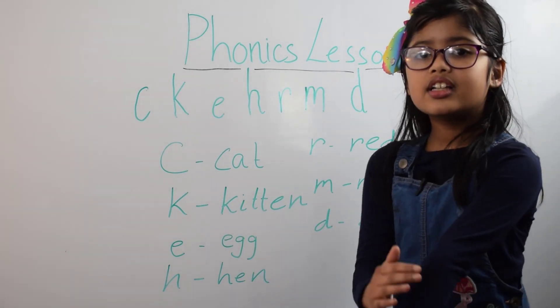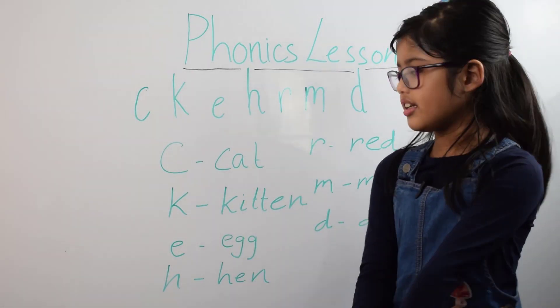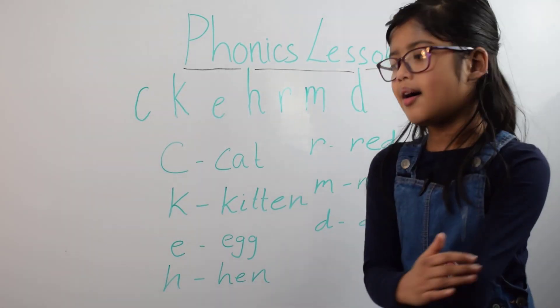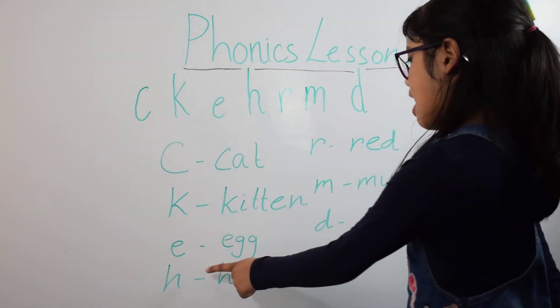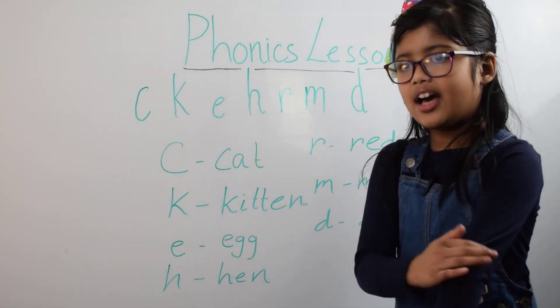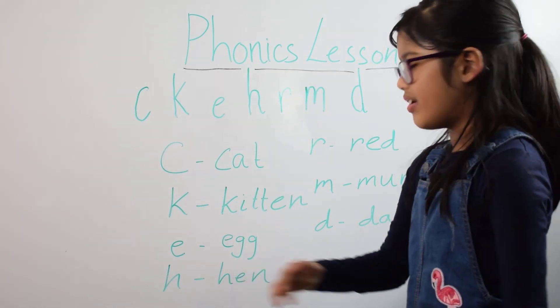K-I-T-T-E-N kitten. Mum, M-U-M mum. E for egg, E-G-G. D for dad, D-A-D dad for hen.